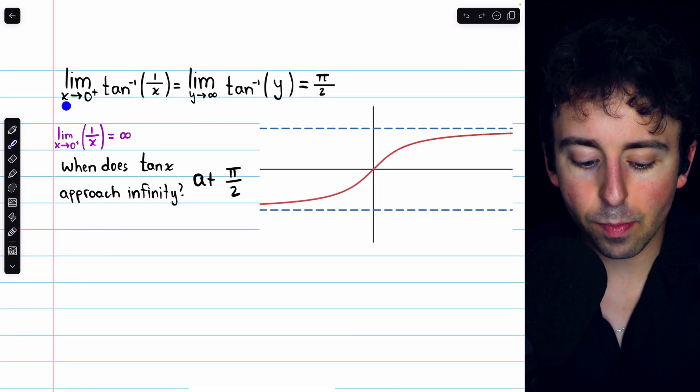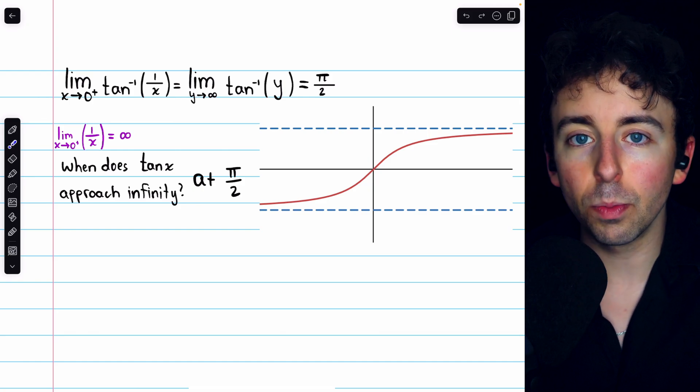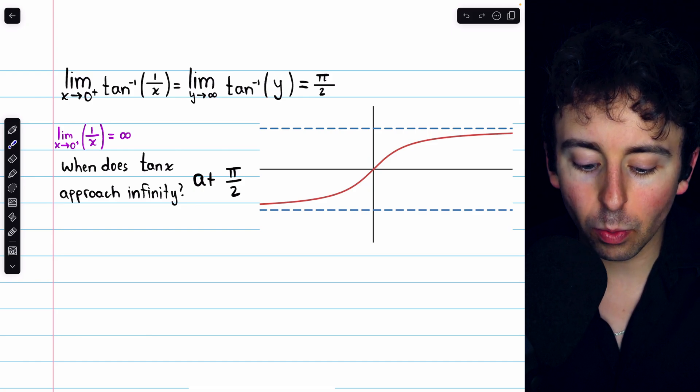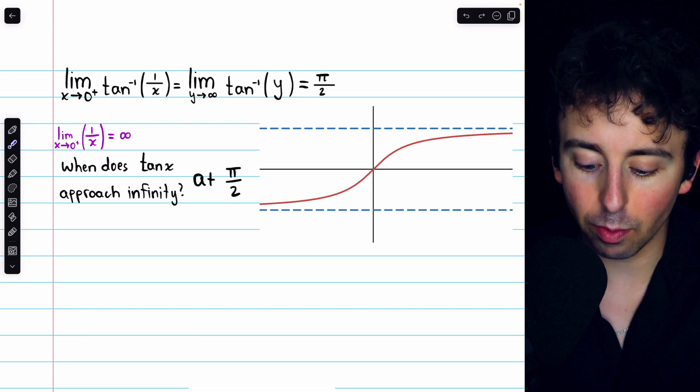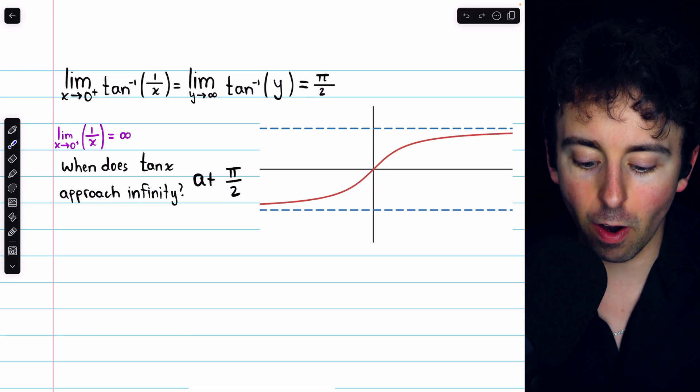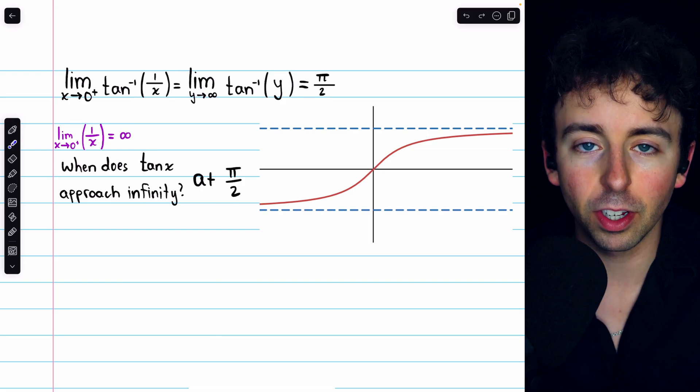Now, if x had been approaching 0 from the left, then x would be very small negative numbers. And so this input would actually be going to negative infinity. And as you could probably guess from the graph, the limit of arctan would then be negative π over 2.